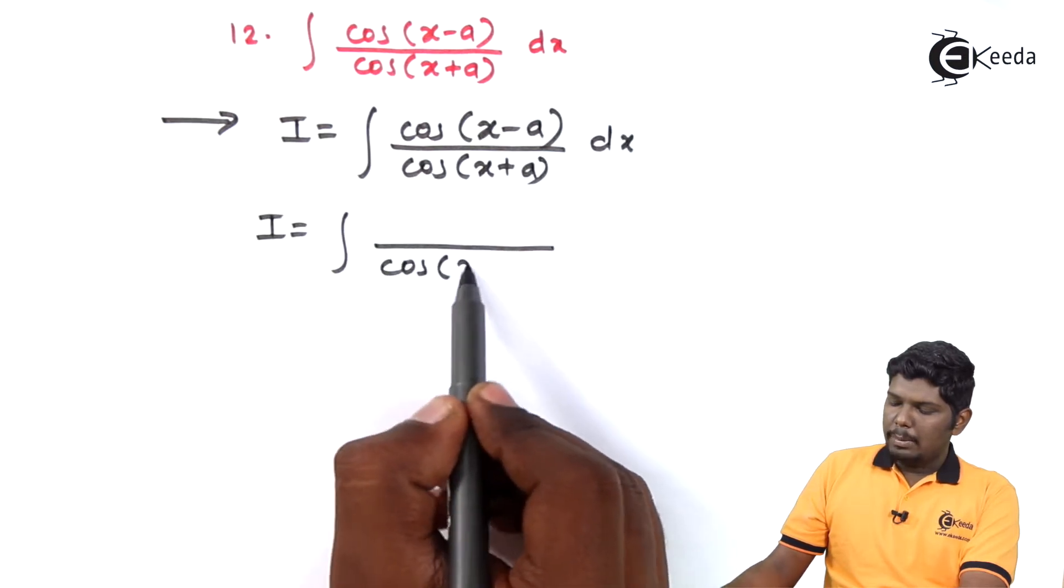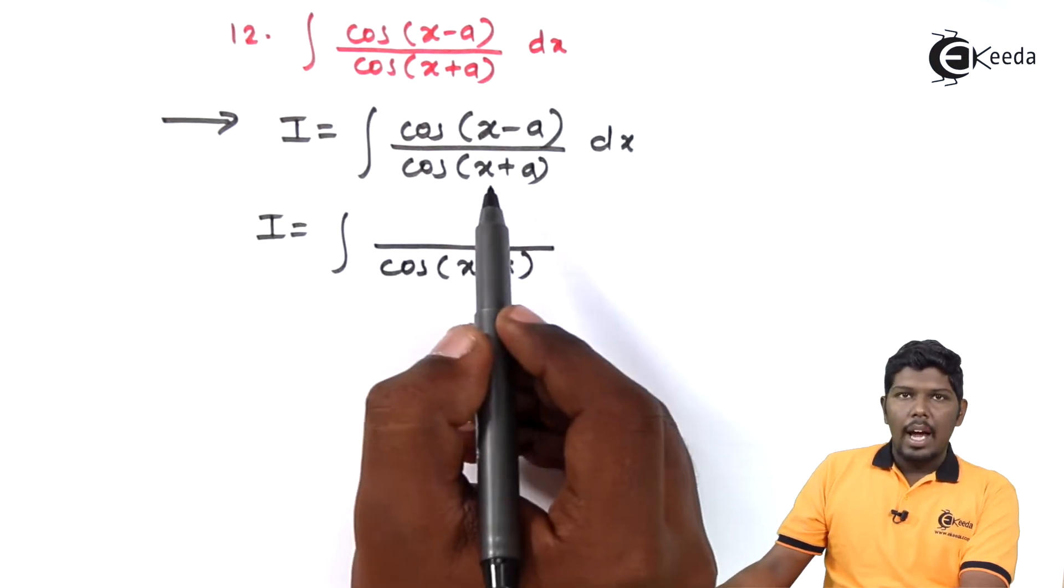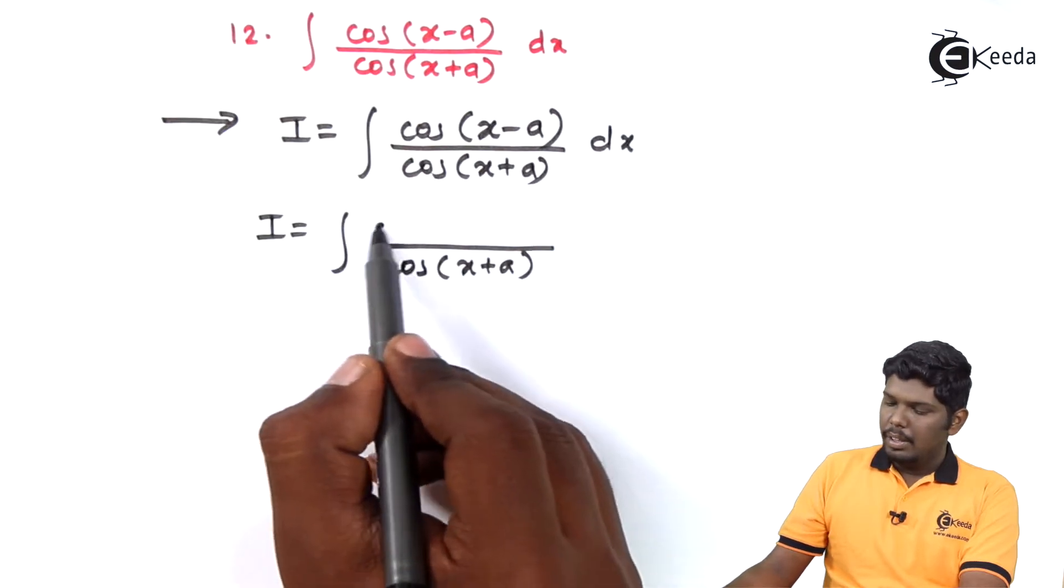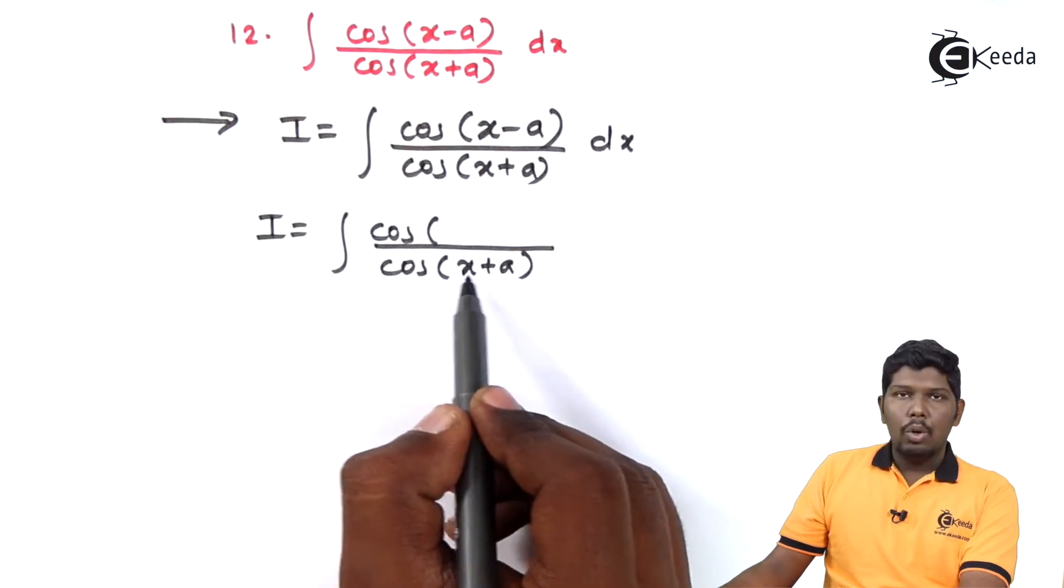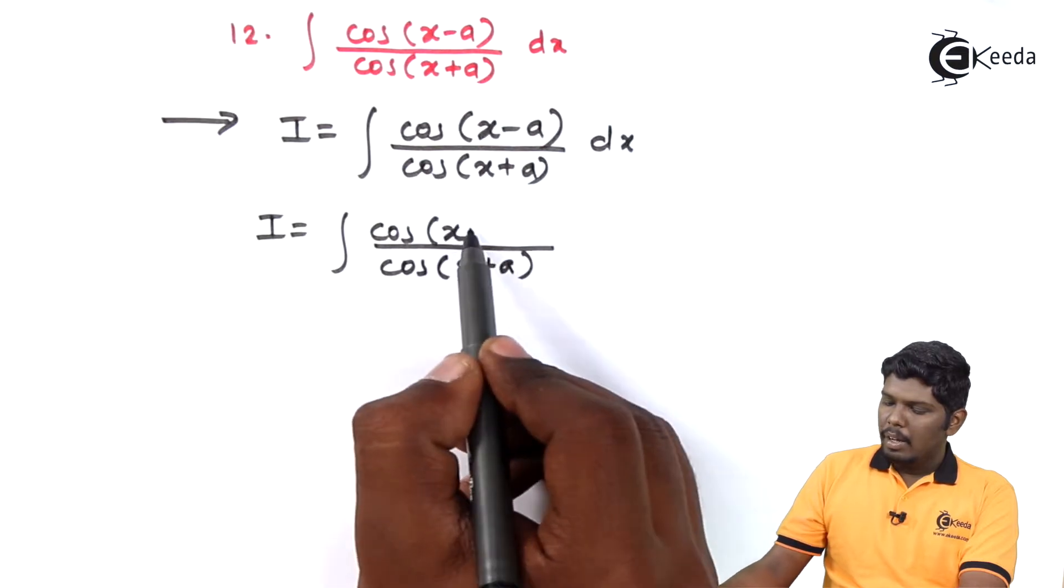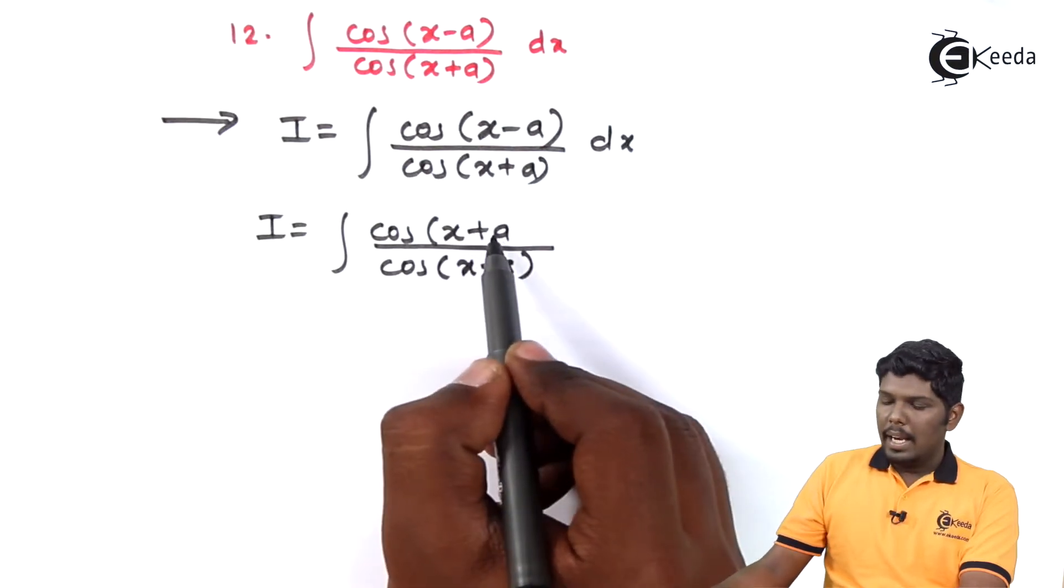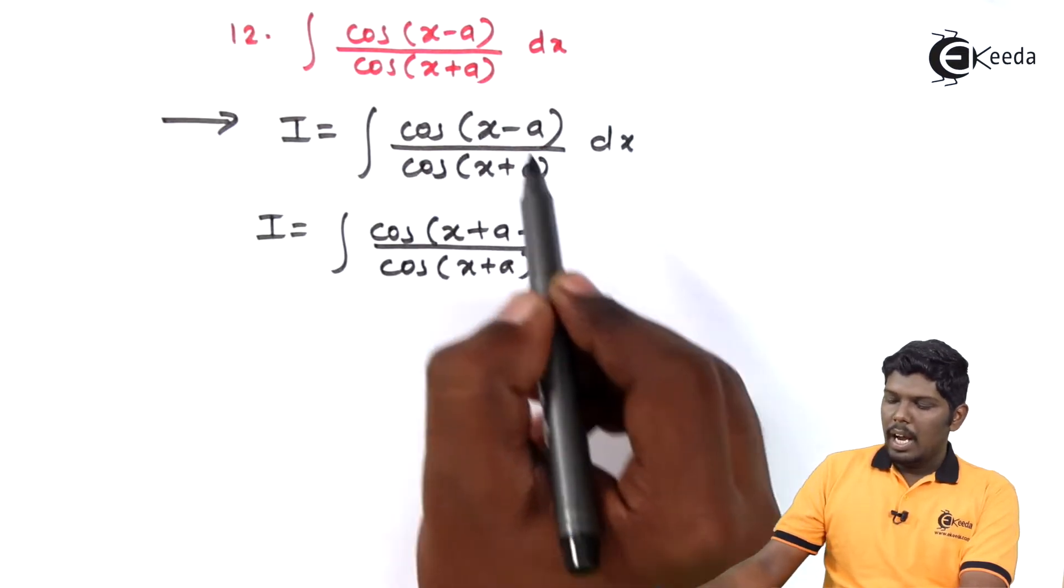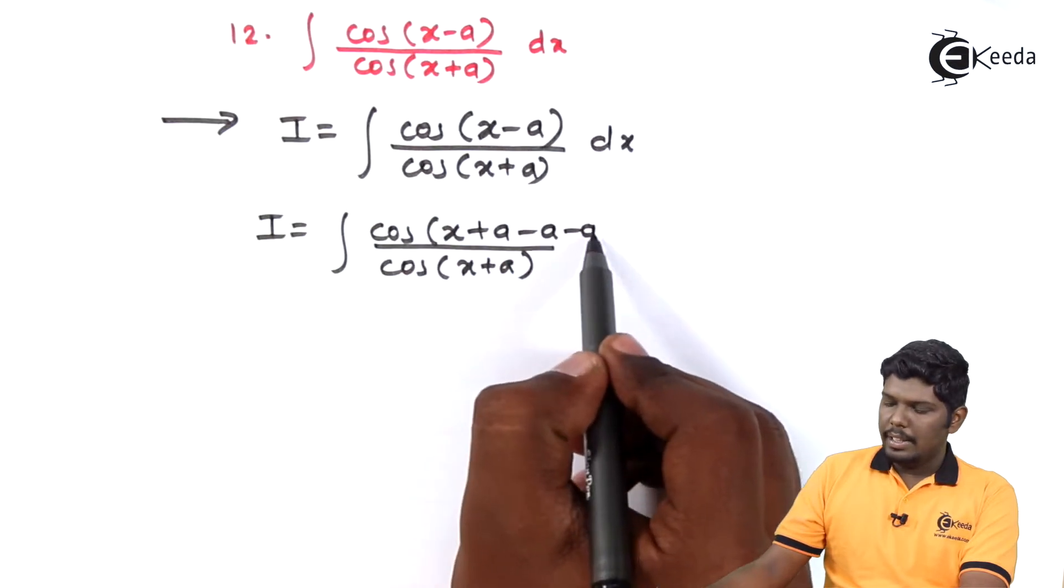Denominator we have cos of x plus a and in numerator we have cos, out of x plus a, x is already present. We will give plus a, balance it with minus a and remaining minus a is as it is.